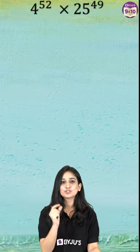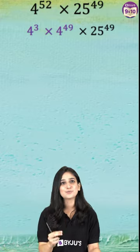So here, the powers are very close. So 4 to the power 52 can be written as 4 cube into 4 to the power 49.